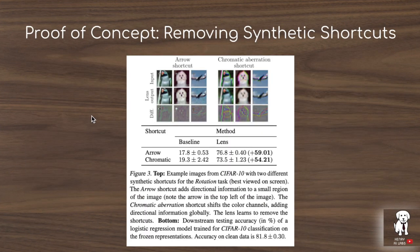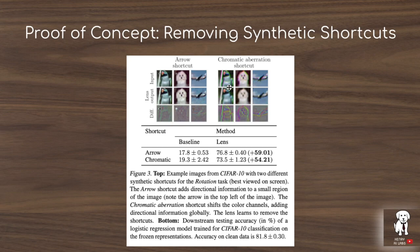The authors originally test automatic shortcut removal by artificially adding synthetic shortcuts like arrow shortcuts in dog, plane, and bird images, as well as chromatic aberrations. You can see the difference in the lens output — the lens takes this input and produces a modified image, and you can subtract the two to visualize what the lens network has done. The baseline without the lens achieves about 18–19% accuracy on CIFAR-10 classification, compared to 76.8 and 73.5% when using the lens, almost recovering the performance of fully supervised training on clean data.